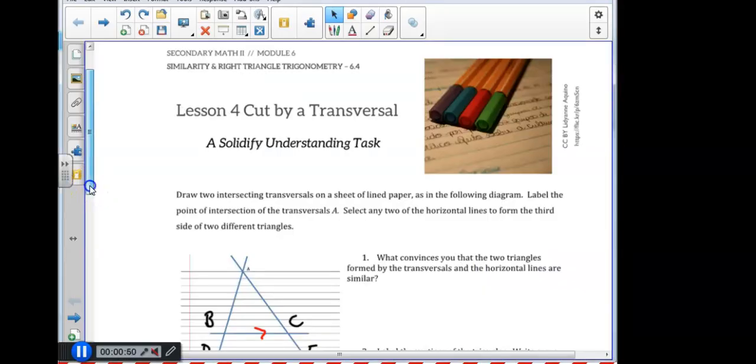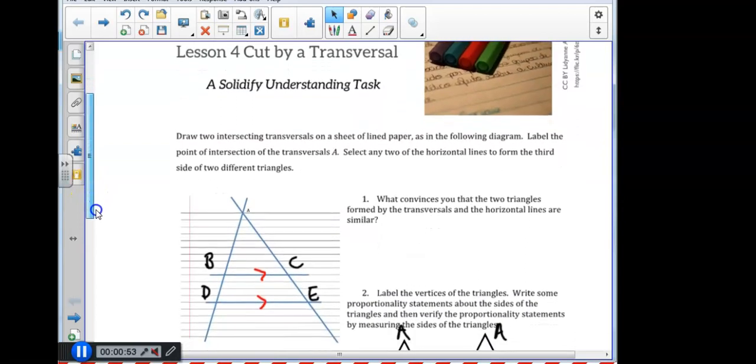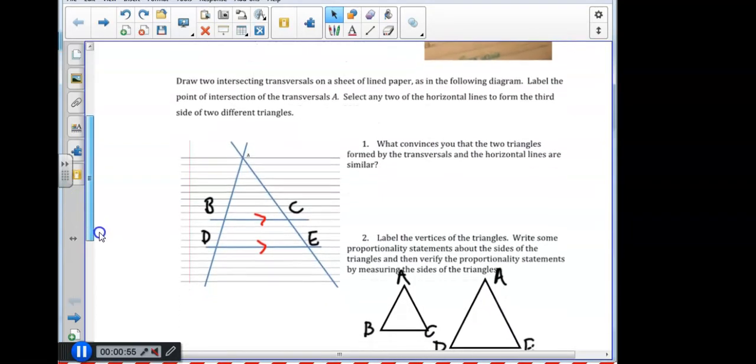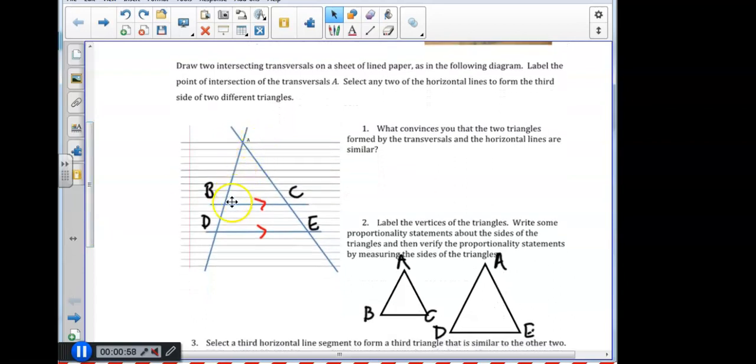In lesson 4 of Unit 7, Cut by a Transversal, we are asked to draw two intersecting transversals on a sheet of lined paper as in the following diagram. We are asked to label the point of intersection of the transversals A, just like in the diagram, and select any two of the horizontal lines to form the third side of two different triangles. So I am going to use this diagram here, and I am going to take a look at number 1. With lined paper, we do know that all of the lines will be parallel. Therefore, I have marked in red here that BC should be parallel to line segment DE.